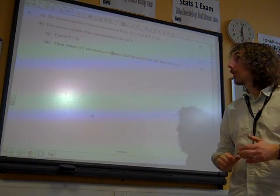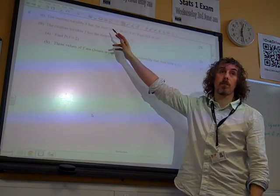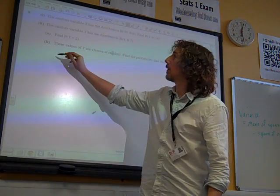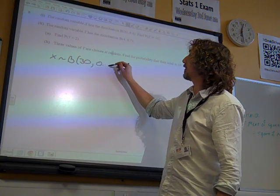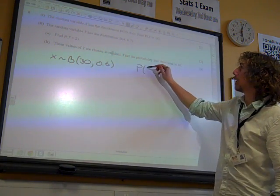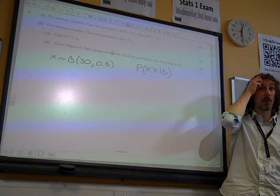Okay, question 8. The random variable x has the distribution x follows by the distribution with 30 and 0.6, and we're after probability of x being greater than equals to 16.